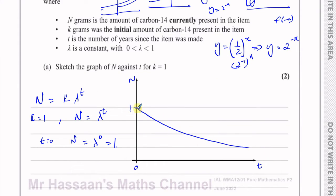So we should mark (0, 1) on the graph because when k is 1 and t equals 0, n is definitely equal to 1. That's the answer to part A.